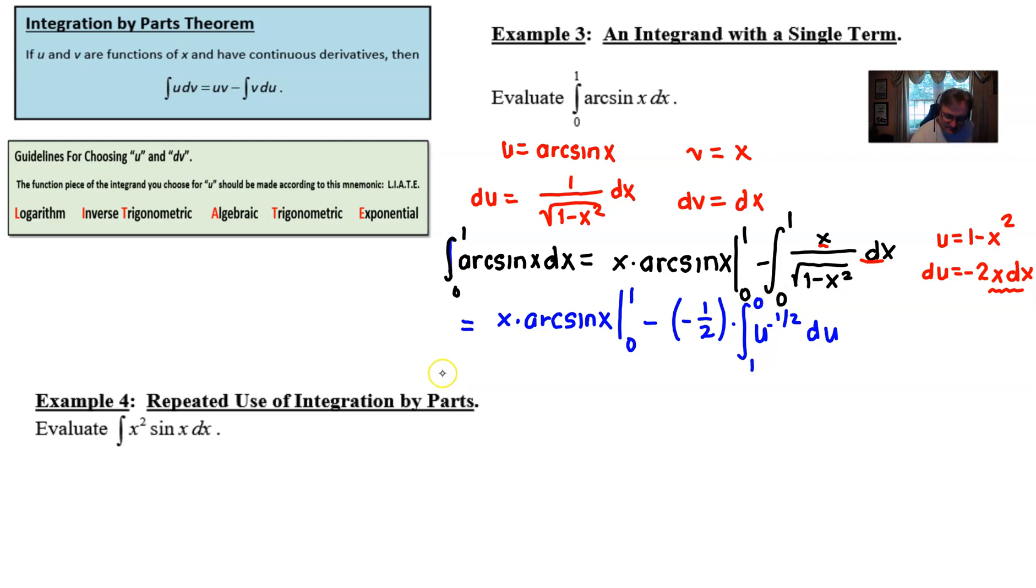Let's go ahead and integrate. Well we're going to still wait on this x times arc sine of x and the boundaries for that are still 1 to 0. We haven't done much with it yet and then for this minus negative I'm going to add the 1 half and then let's integrate u to the negative half. That would give us u to the positive 1 half of which I can call square root of u and then if I divide by 1 half that's the same as multiplying by a 2. And the boundaries of integration for this expression are going to go from the 0 to 1.